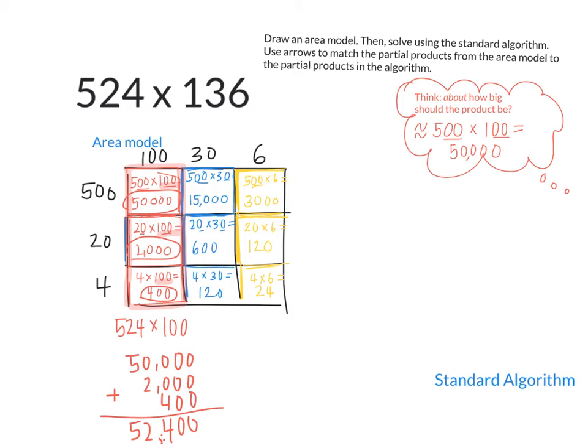Next, over here, what do these have in common? 500 times 30, 20 times 30, 4 times 30. What do they all have in common? Because I basically, to find this blue section here, I'm doing 524 times 30. Do you agree? And to find that, I could just add 15,000 plus 600 plus 120. Go ahead and do that. 15,000 plus 600 plus 120. When you do that, you get 15,720. Do you agree?